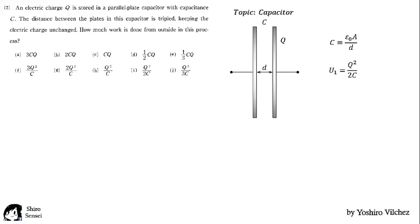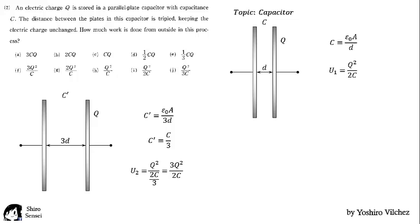In the other situation, the problem says that the distance is tripled, so the new capacitance will be C over 3. And the new internal energy, replacing values, is 3Q² over 2C.